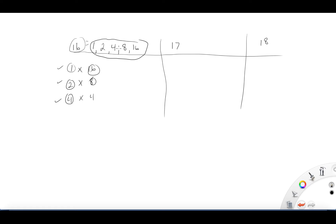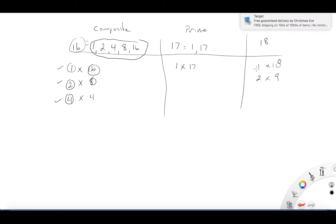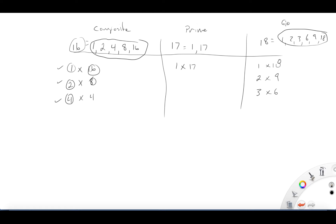For 17: one times 17 is 17, and there's nothing else, so the factors are just one and 17 — that makes 17 prime. For 18: we have one and 18, two and nine, and three and six, giving factors one, two, three, six, nine, and 18 — that makes 18 composite. So we have two composites and one prime.